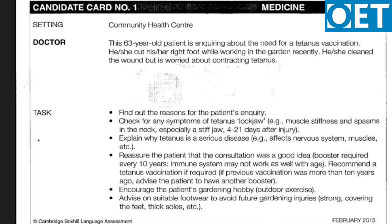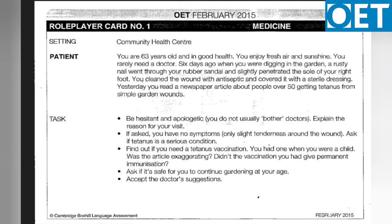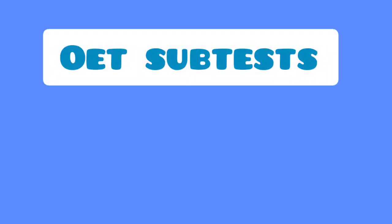The role play card has three parts. The first part is the setting — which can be a GP clinic, ER, ICU, or any other place. The second part is the patient's background or the issue for which they are visiting. The third part is the task, which guides you on which questions to ask about patient history, how to reassure the patient, and what points to cover regarding treatment. Both you and the interlocutor get your own cards. Thank you for watching this video. For queries, please comment, share it with your friends, and subscribe to the channel.